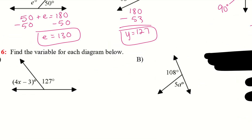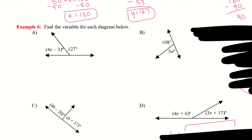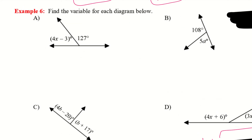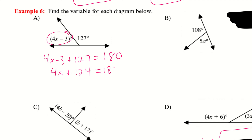Let's try a few examples with actual solving. Same as above, I'm going to do A and C, and you'll try B and D. For A, even though we have more than just a variable, we're still going to add them together and they still equal 180. So: 4X plus 124 equals 180. Subtract 124 — 4X equals 56. Divide by 4 — X equals 14.